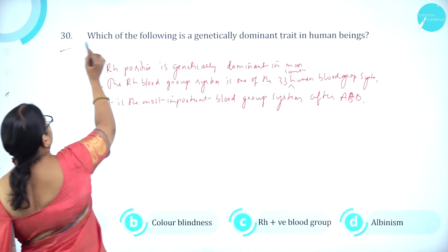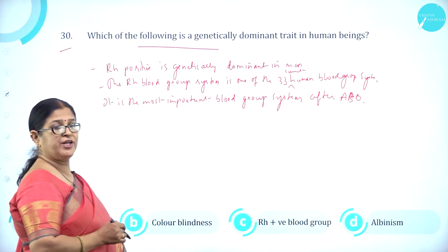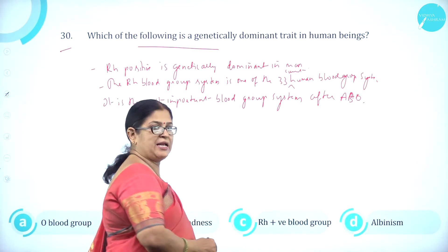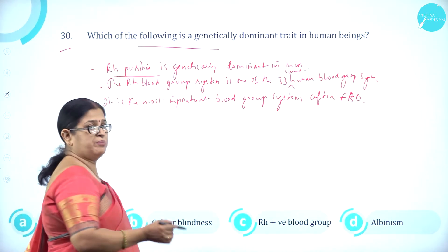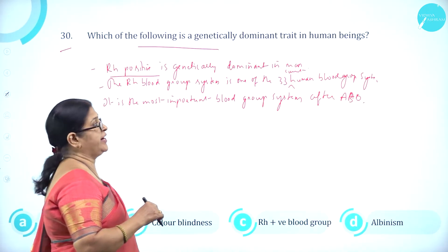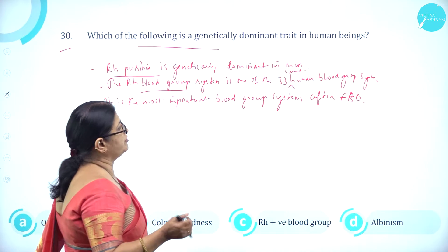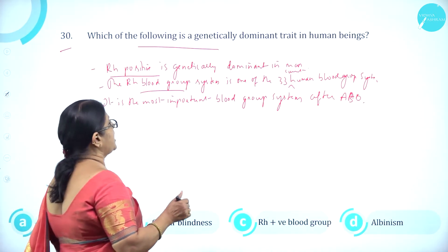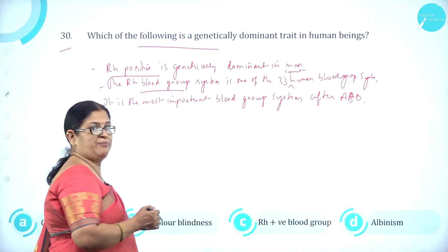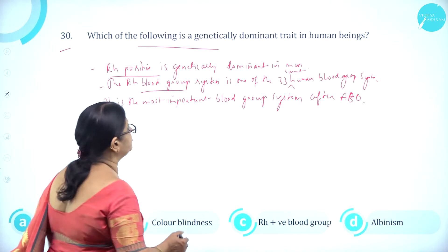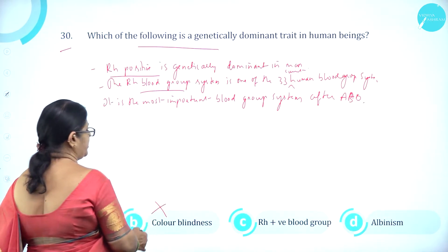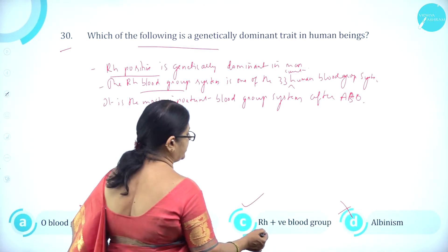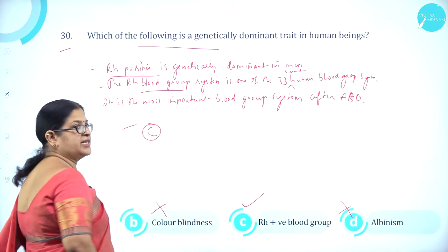Moving on to question number 30. Which one of the following is a genetically dominant trait in human beings? Option A O blood group, option B colour blindness, option C Rh positive blood group, option D albinism. Rh positive blood group is a genetically dominant trait. The Rh blood group system is one of the most important human blood group systems after ABO. So option C Rh positive blood group is correct.